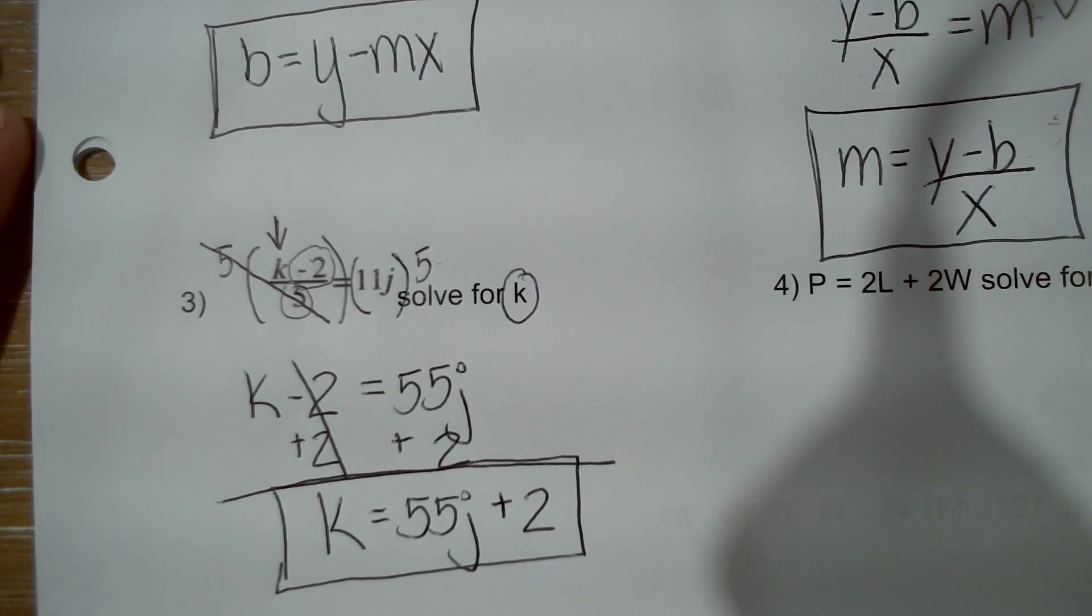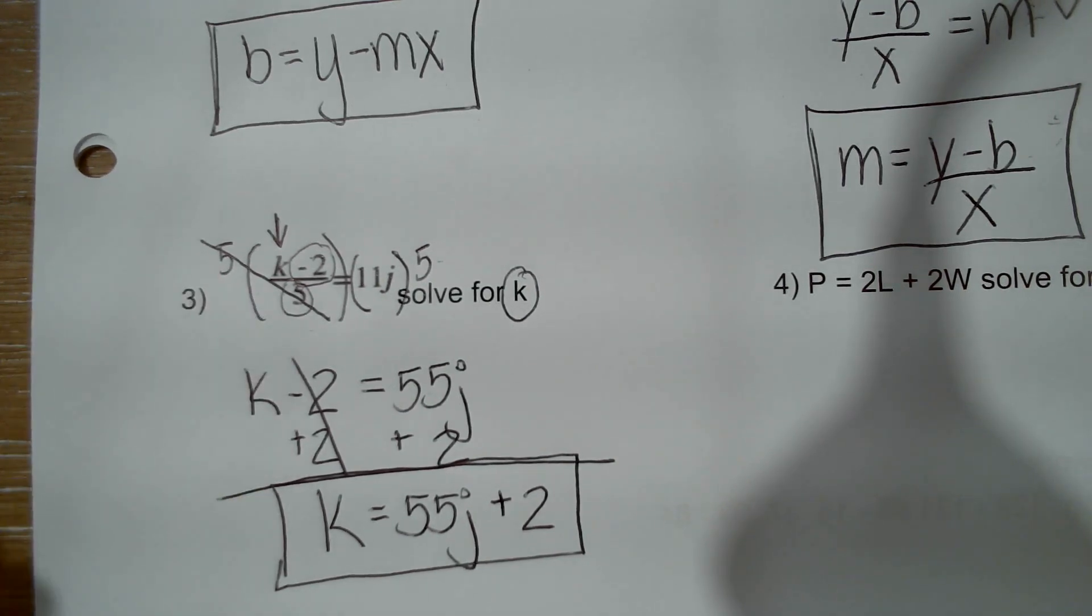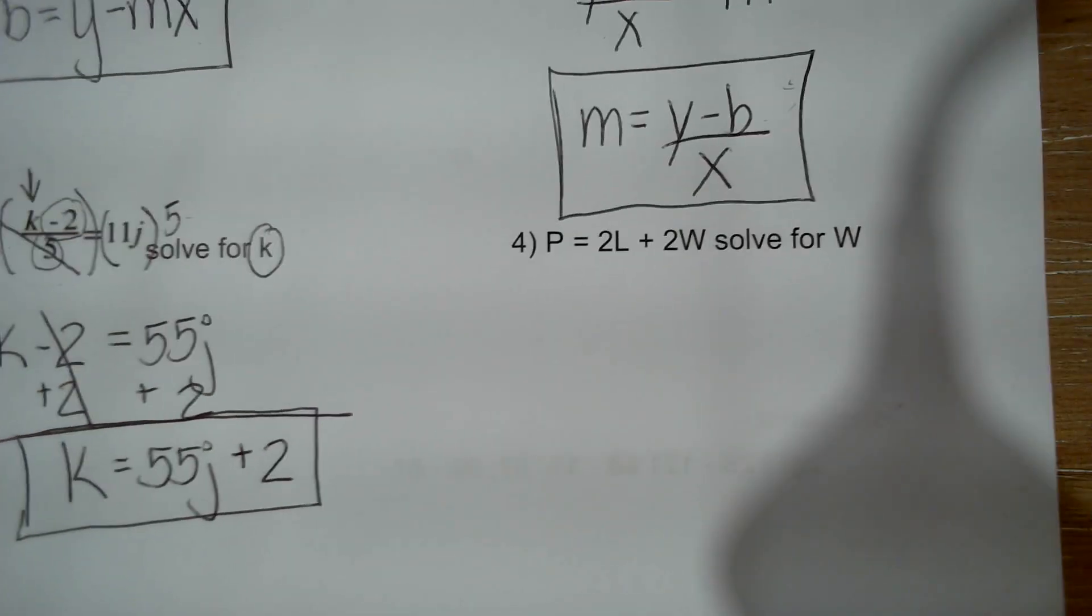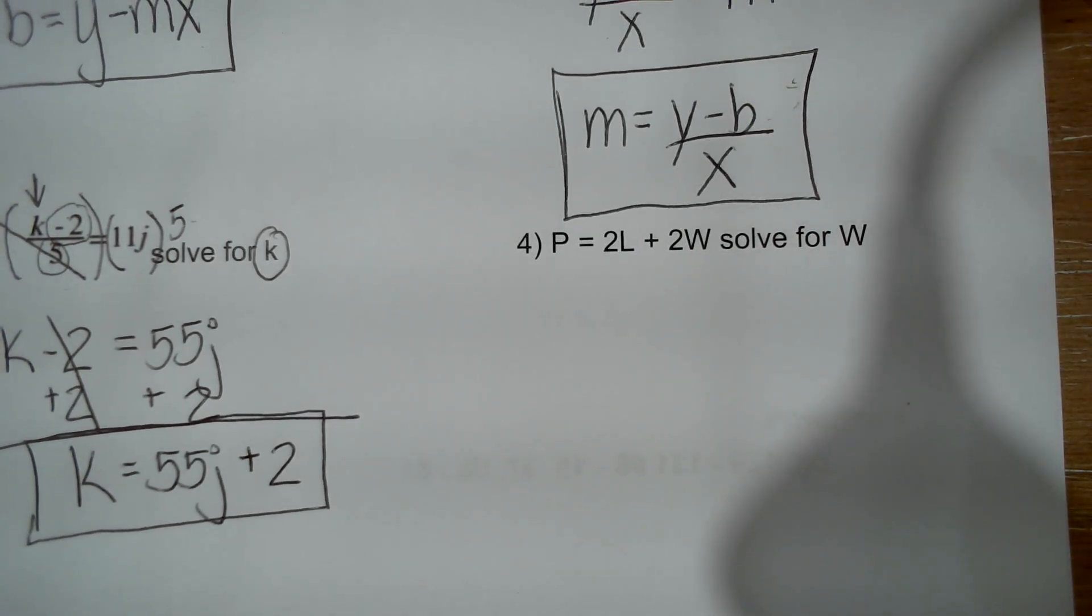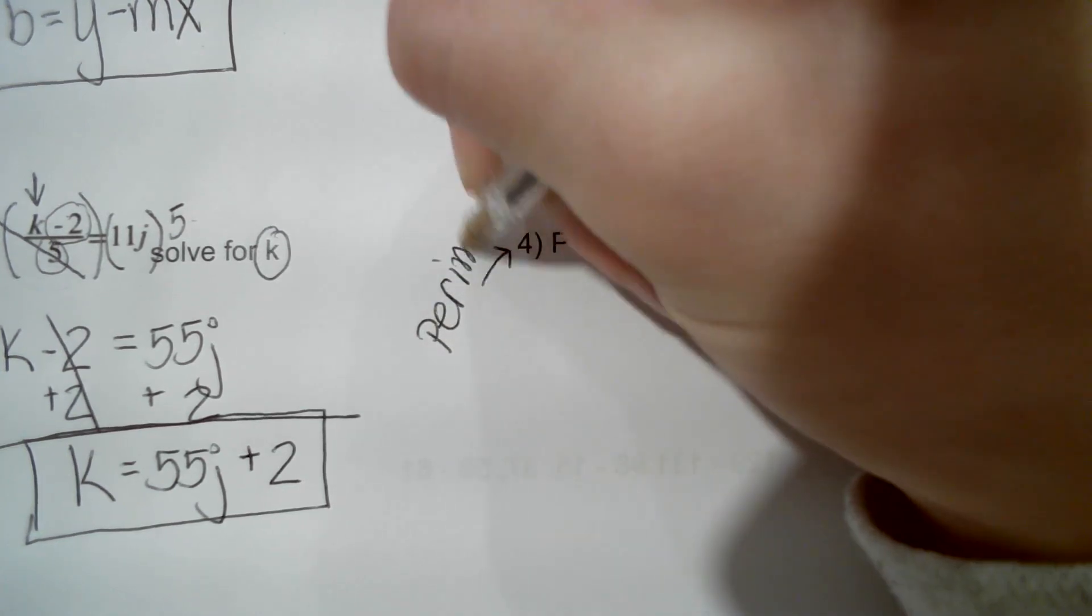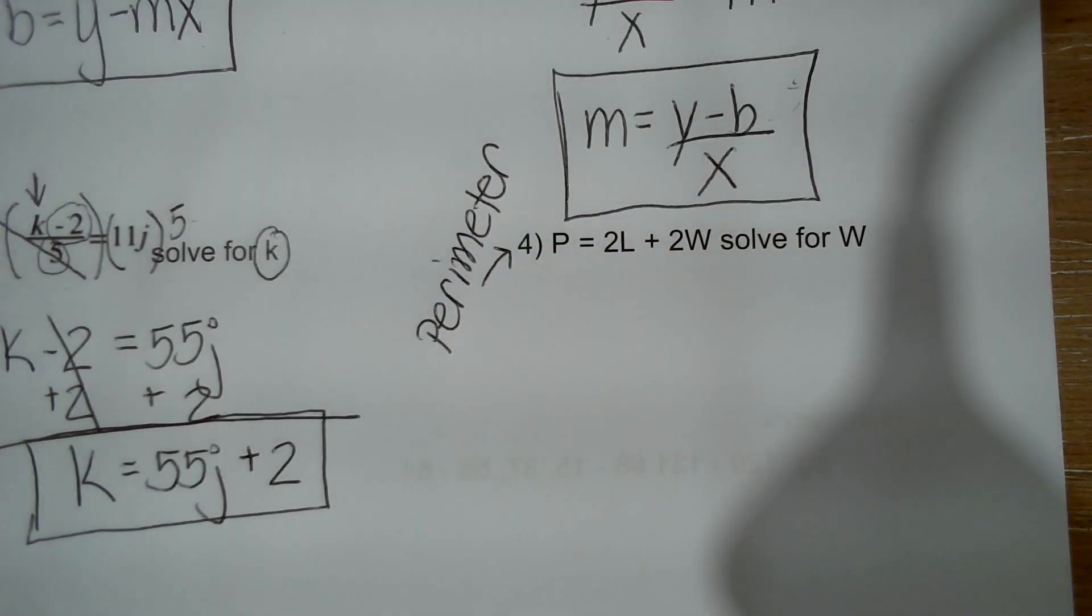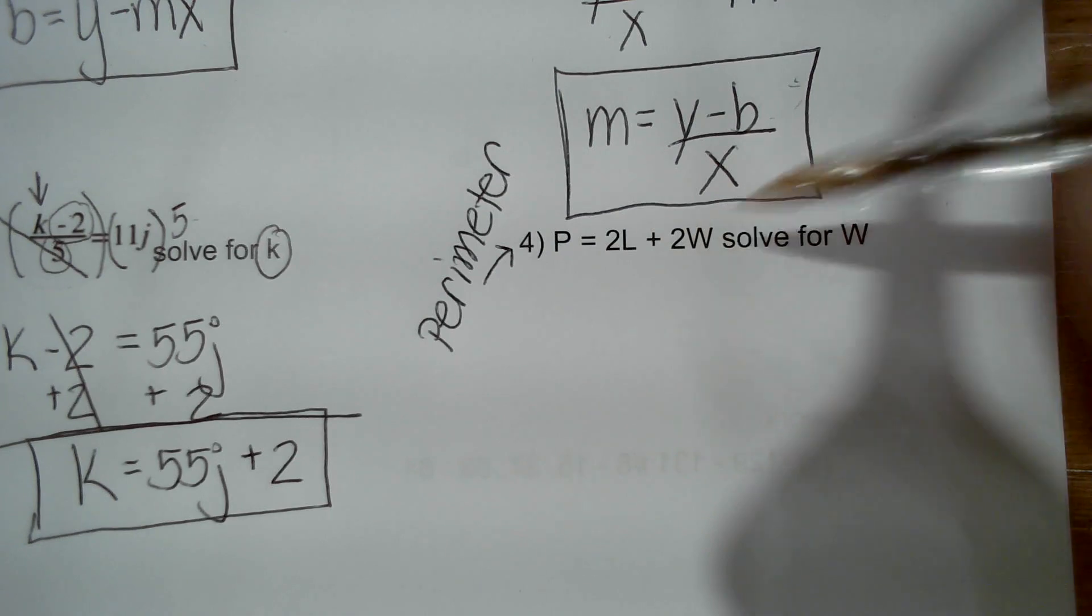All right. So hopefully you're realizing we're not learning any new steps or strategies. We're just learning how to apply what we know to literal equations that we can use to find certain unknown values. So let's move on. The next equation: P equals 2L plus 2W. Now does this look familiar? It should. This is our perimeter formula.